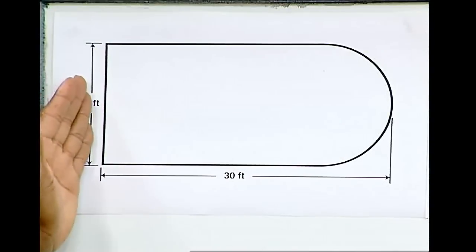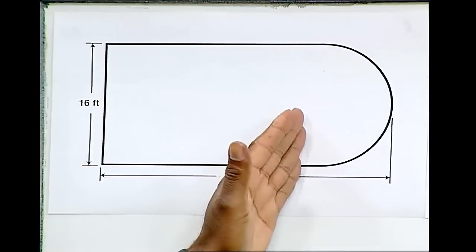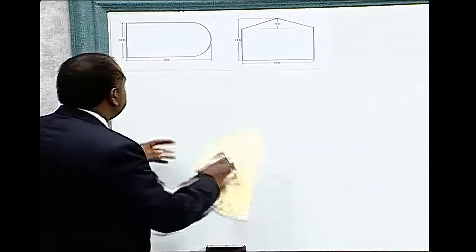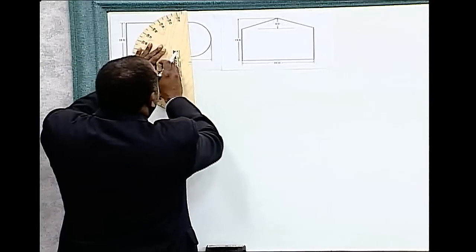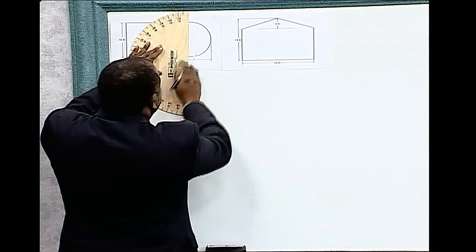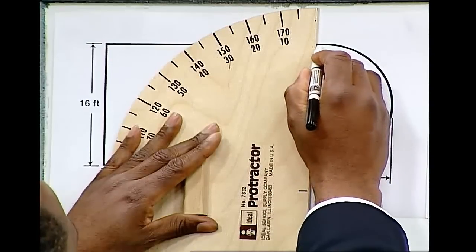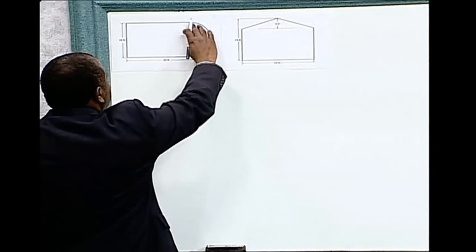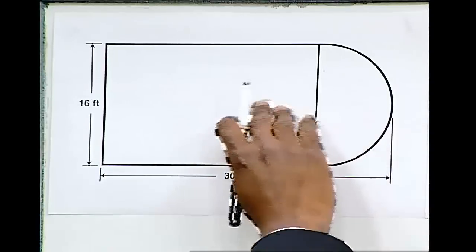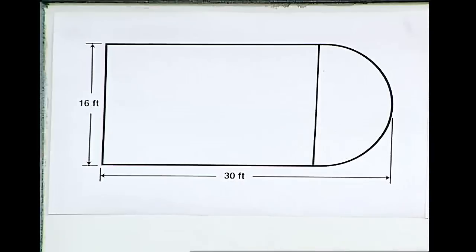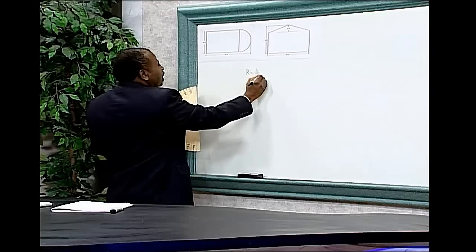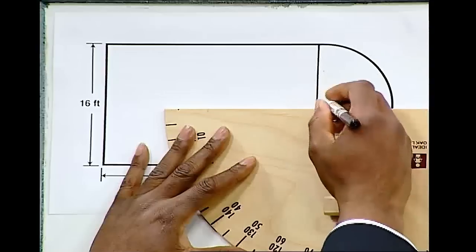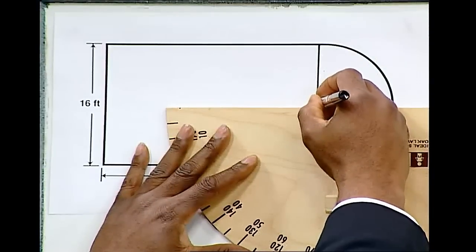If you look at this room, this part looks like a rectangle, whereas this part looks like a circle. If we draw a line down from the top to the bottom, this line will constitute the diameter of this circle. If this is the diameter, the radius is equal to one-half the diameter, which means that the radius of this circle would be equal to eight feet.